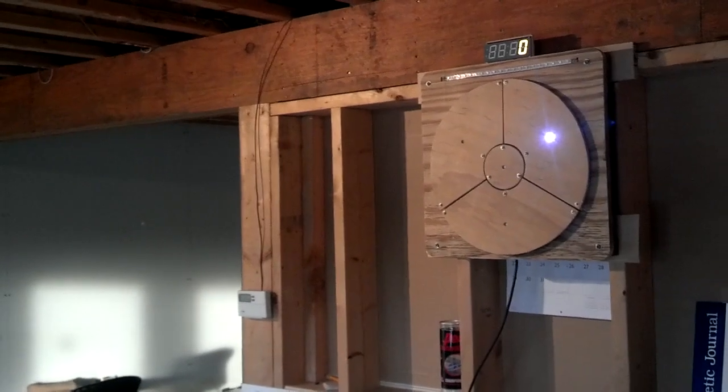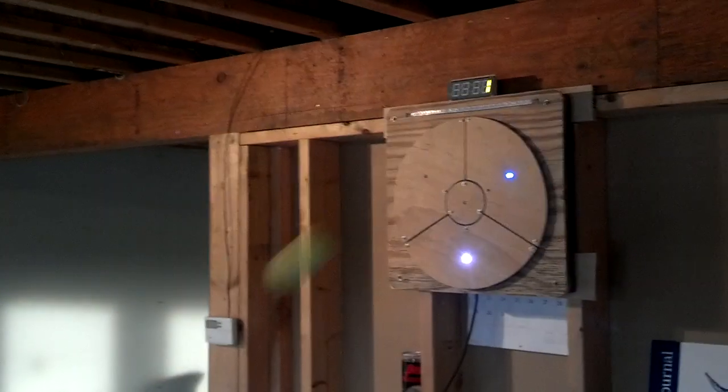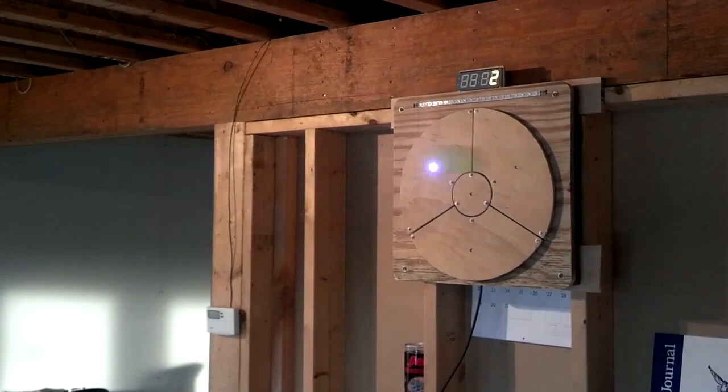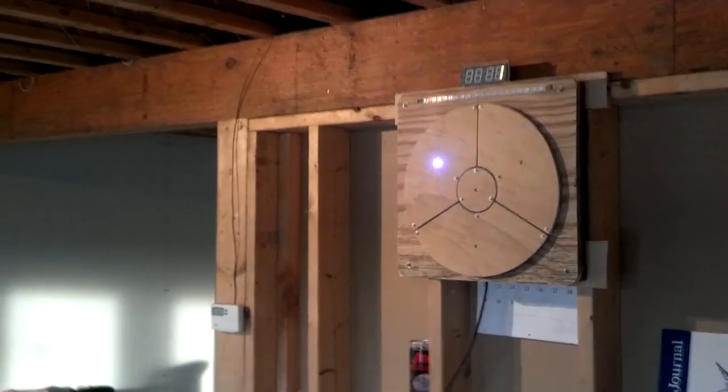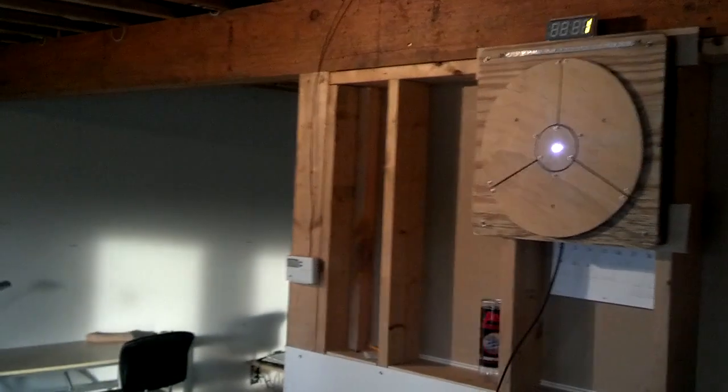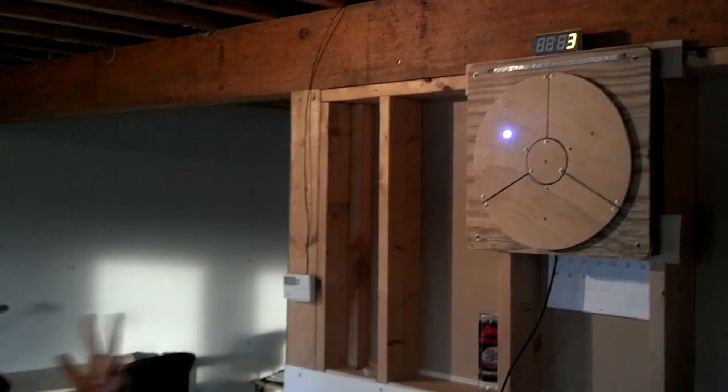If you hit a pad that doesn't have a light, you get minus one. So I get a point, I get a point, I get minus one point, minus one point, I get a point. In the middle you get two points.